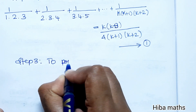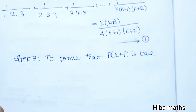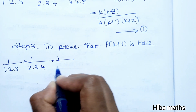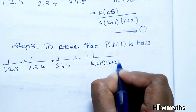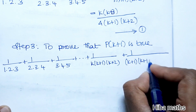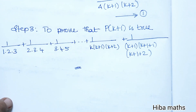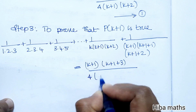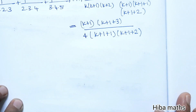Step 3: To prove that P(k+1) is true. We need to prove: 1/(1·2·3) + 1/(2·3·4) + ... + 1/(k·(k+1)·(k+2)) + 1/((k+1)·(k+2)·(k+3)) equals the RHS with k replaced by k+1. The proof is straightforward once we add the next term to the LHS.